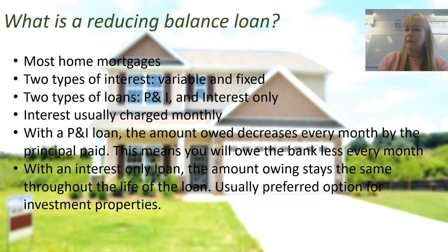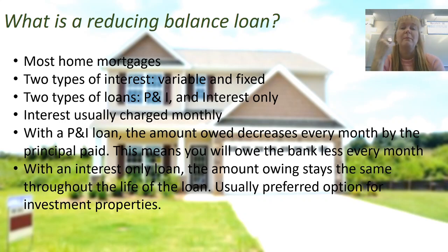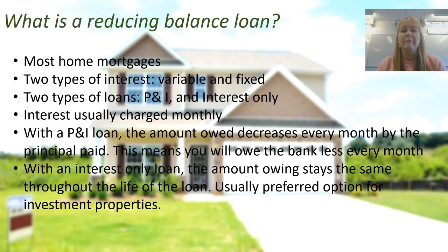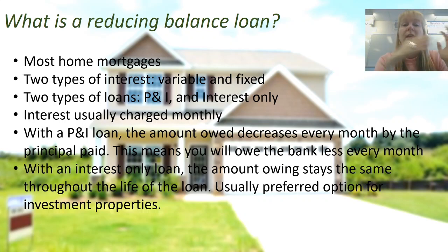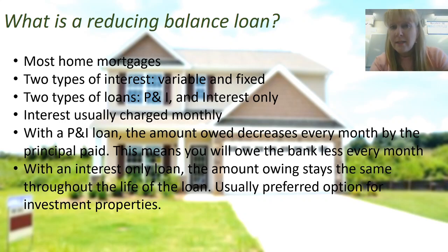With an interest-only loan — usually on investment properties — the amount you owe stays the same for the whole life of the loan. You pay the same amount of interest every single month, which makes budgeting straightforward. But at the end of the loan, in 40 years' time, you will still owe the bank the full value of that investment property. The idea is that investment property owners only get a tax deduction on the interest part of the loan, which is why they typically don't pay off the principal. Instead, they hold it for a while, wait for the value of the house to go up, and then sell it.